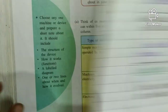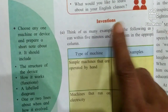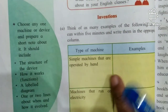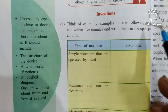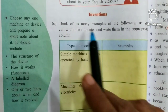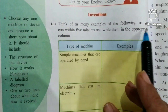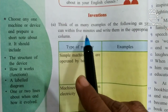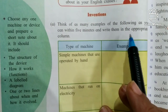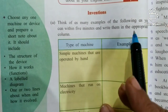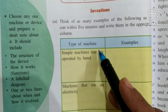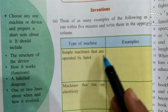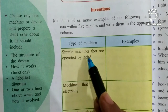Now after the Chit Chat section, there is Inventions. In this Inventions section, the question is: think of as many examples of the following as you can and write them in the appropriate column. Two columns are given: simple machines that are operated by hand, and machines that run on electricity.